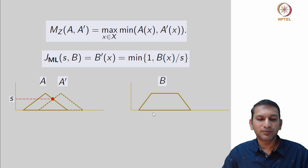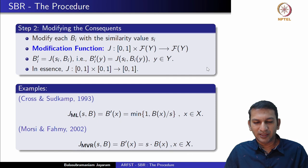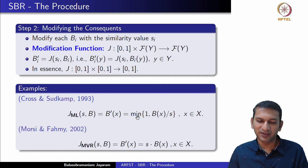Let us also look at the min t-norm as a modification function: B'(x) = min(S, B(x)). This thresholds the consequent B at the similarity value S, cutting off the membership values at S.